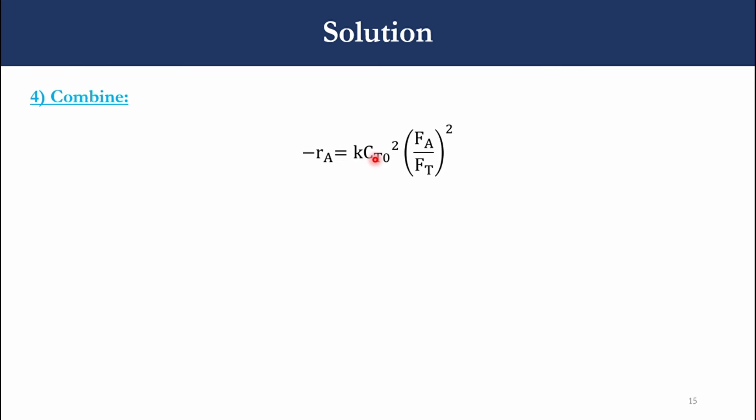Then we have to combine all these concepts. Minus RA equals K CA squared. So CA is replaced by CT0 times FA over FT. Since it is CA squared, we get CT0 squared times FA over FT whole squared. Then DFA over DV equals RA. Minus RA equals this, so RA will be negative of this. DFA over DV equals minus K CT0 squared times FA over FT whole squared. For B, DFB over DV equals, since B is product, RB equals minus RA, so K CT0 squared FA over FT squared. And for C, DFC over DV equals K by 2 CT0 squared FA over FT whole squared. So we have combined mole balance, rate law, stoichiometry, and relative rate concept, and we have derived these three equations in the system.